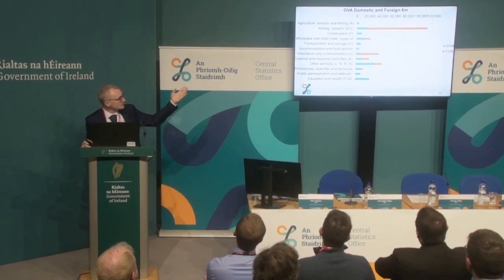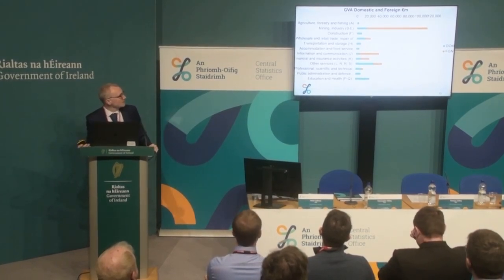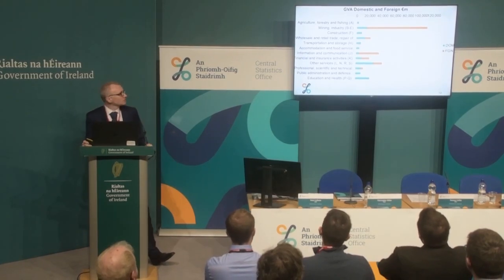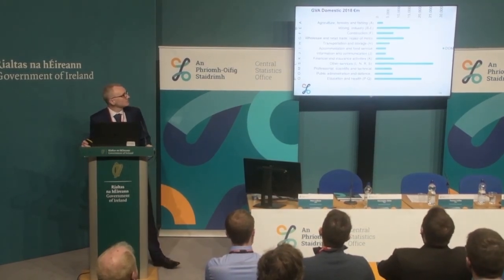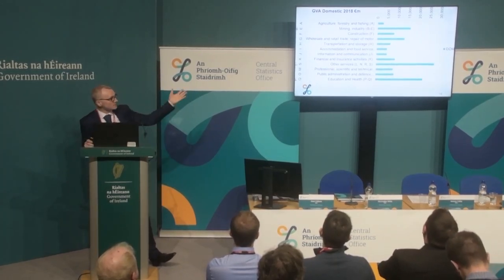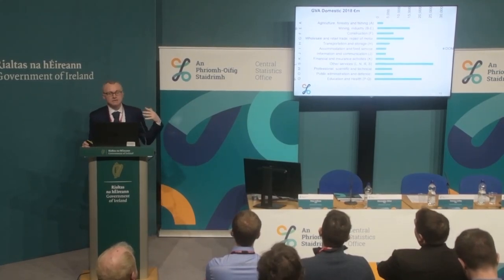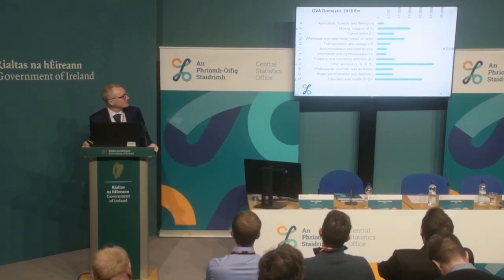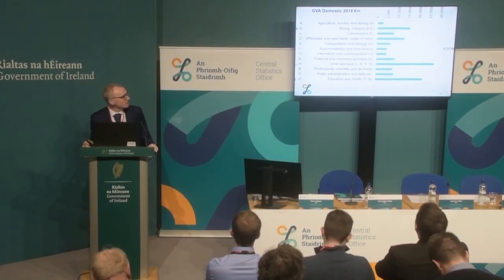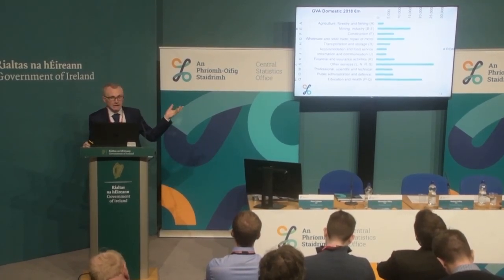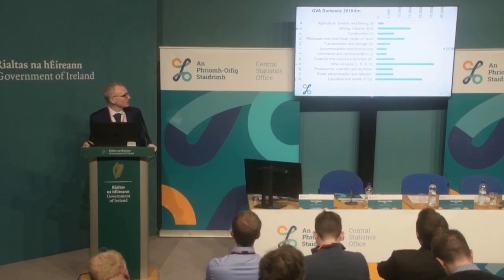You can see the multinationals — the orange — are dominant in ICT, really significant in finance and insurance and trade and so on. When you take out the GVA of foreign-owned multinationals, the domestic picture looks very different. Now other services is the largest single part — that includes the imputed rent. And after that, education and health, trade, industry are also very significant. That other services includes things like commercial rents, gambling, all kinds of agency workers, everything like that.